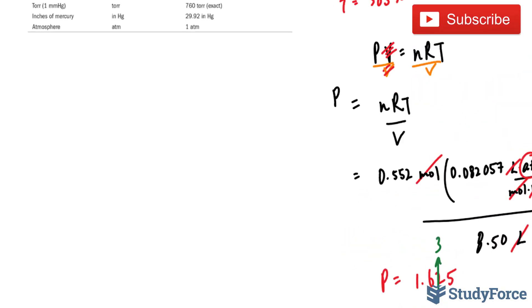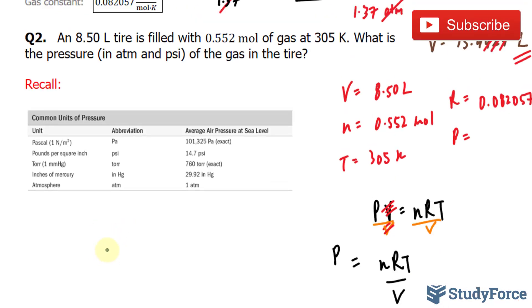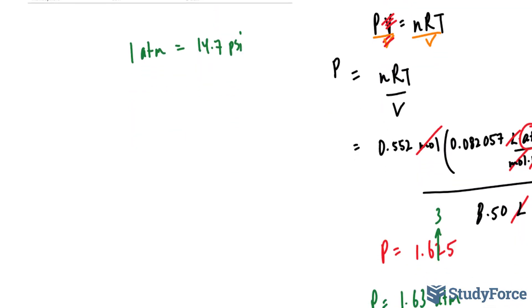To go from atmosphere to psi, we use this conversion ratio, where 1 atmosphere is equal to 14.7 psi. I'll take my number of 1.63 atm and multiply it to 14.7 psi over 1 atmosphere. By orienting it this way, the atmosphere units cancel out and we end up with psi.